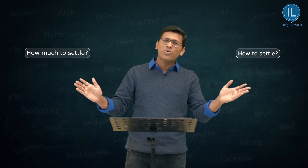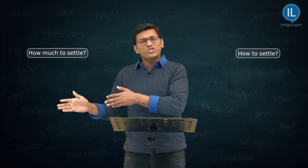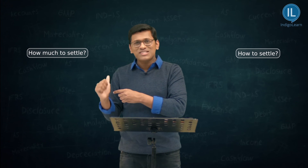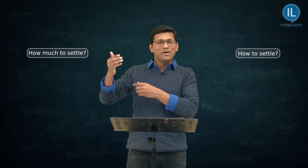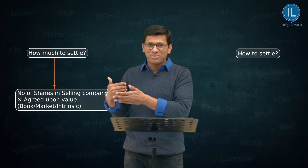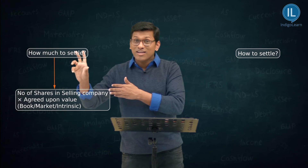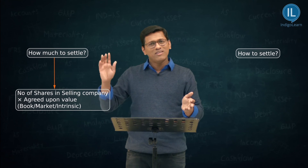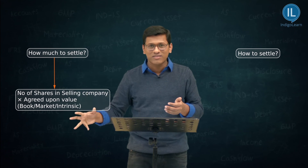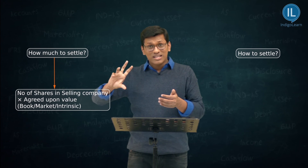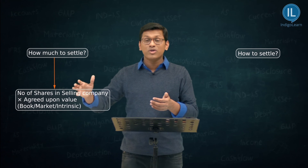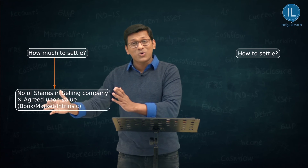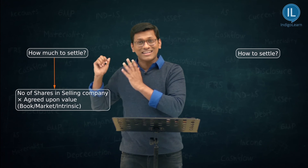If 'how much to settle' is the question, your answer is the number of shares in the old (selling) company multiplied by the worth per share — based on the methods we discussed, whether agreed upon, market, or intrinsic. That number of shares into the value will give you the total amount to settle to the shareholders of the old company.